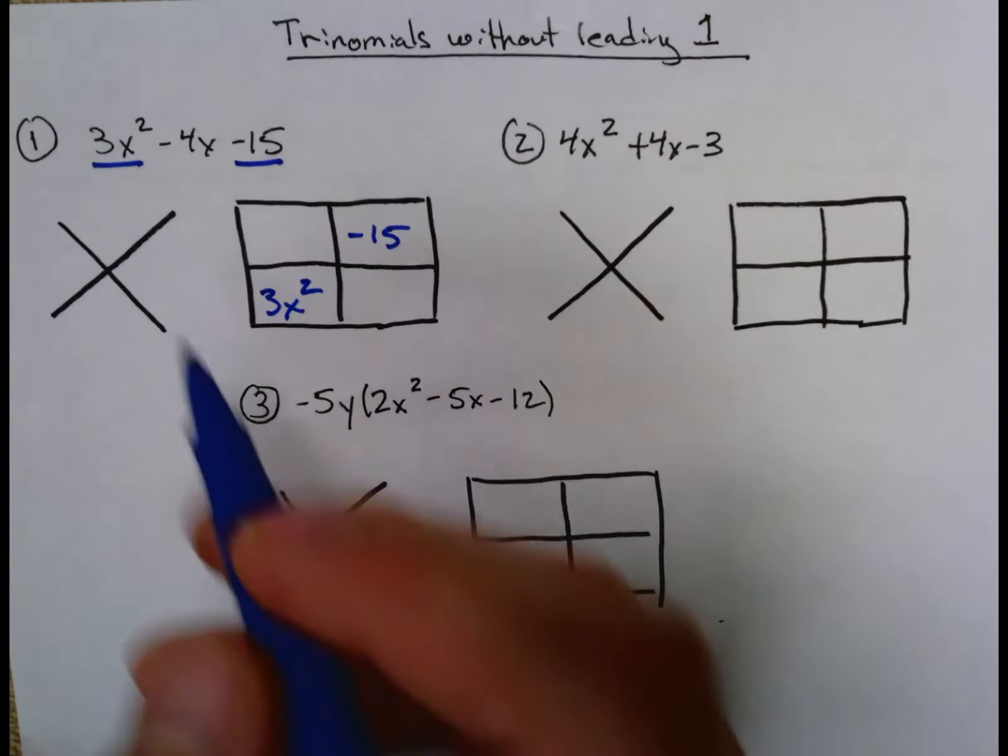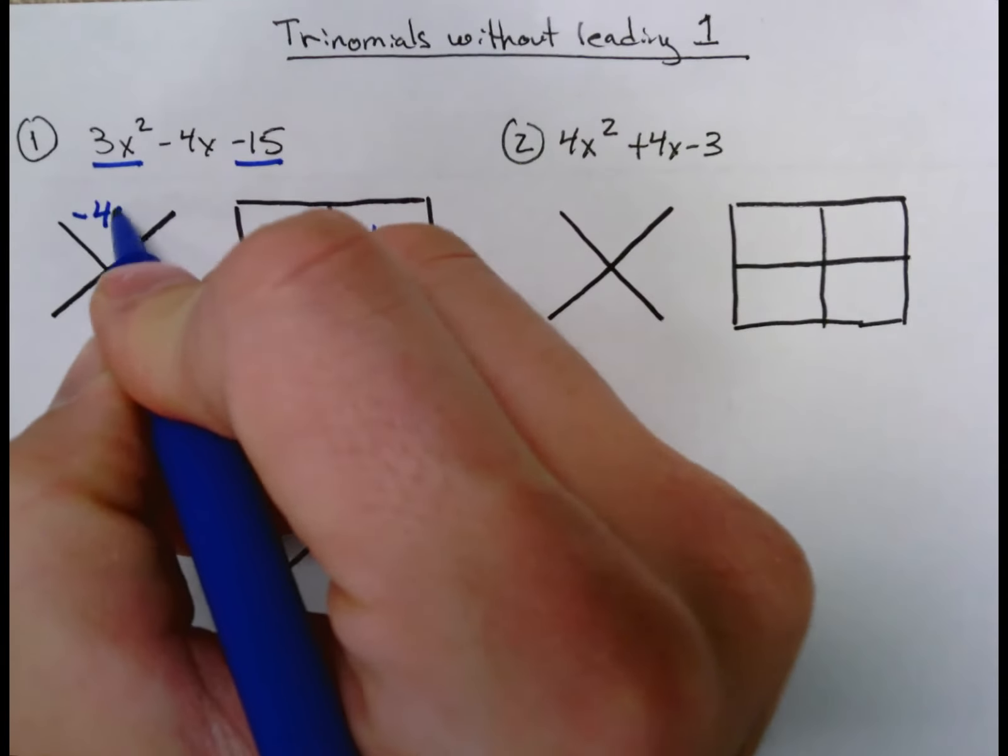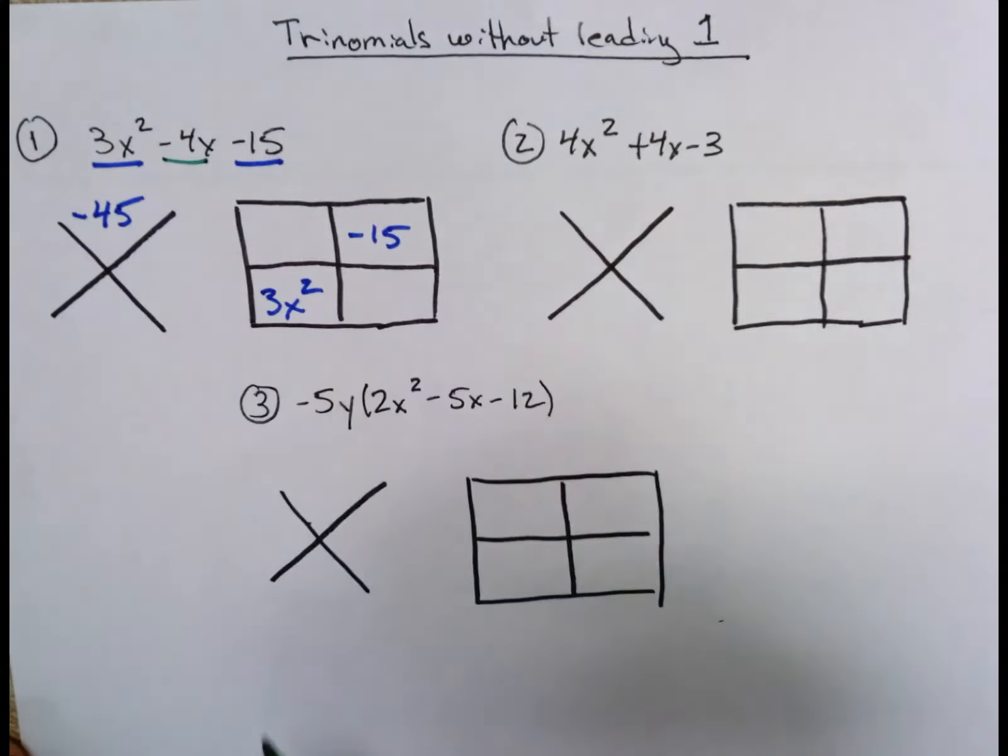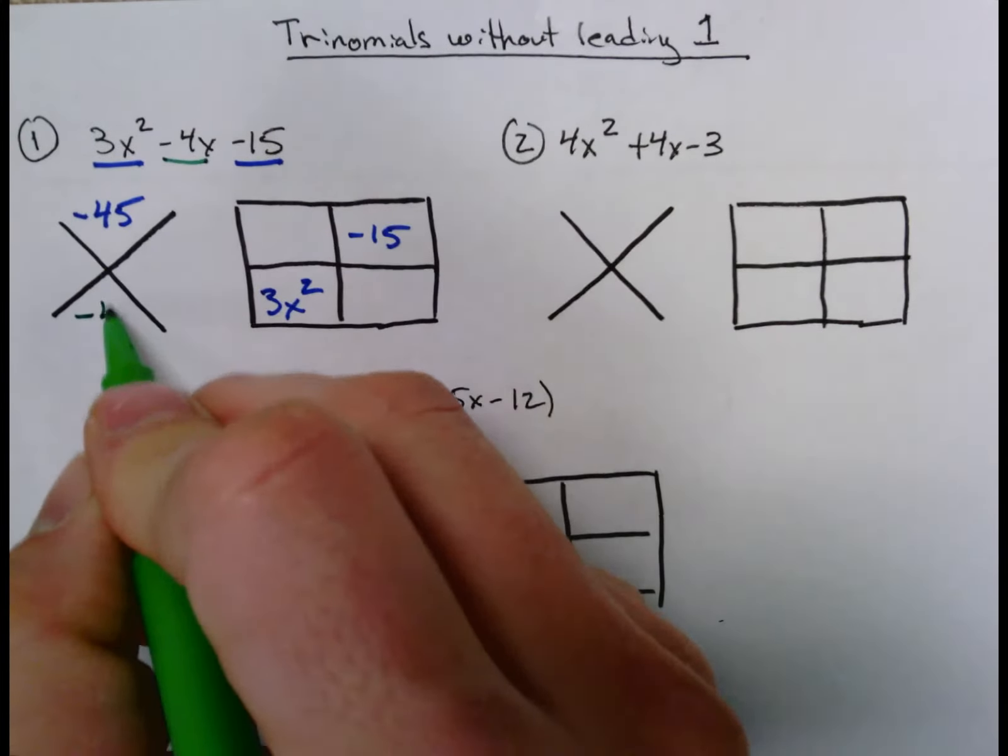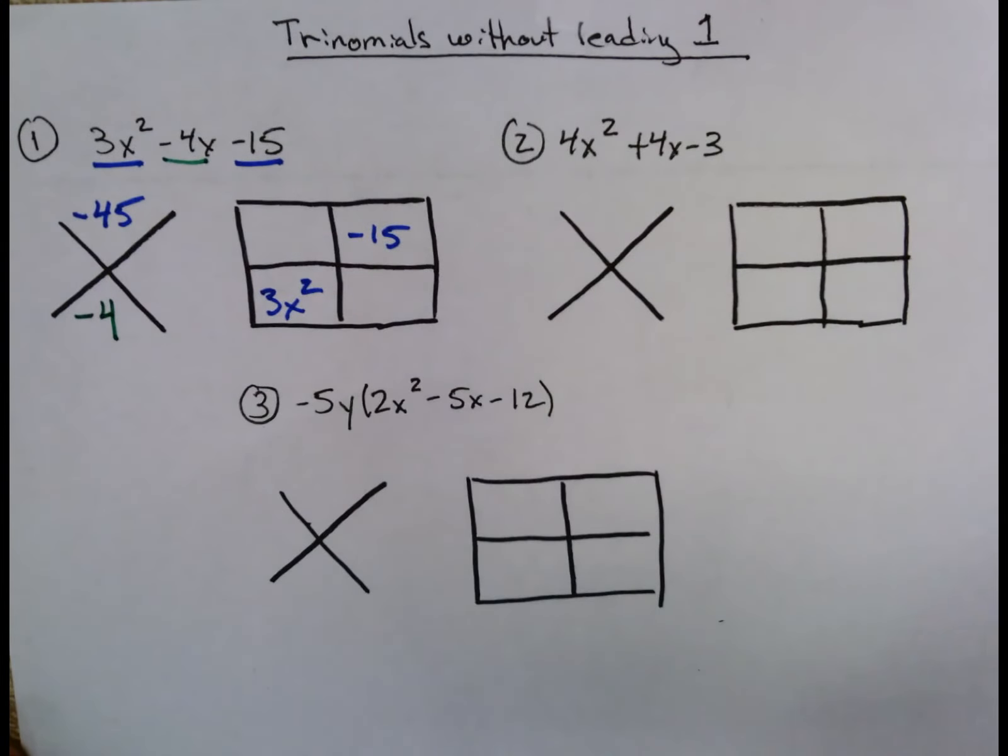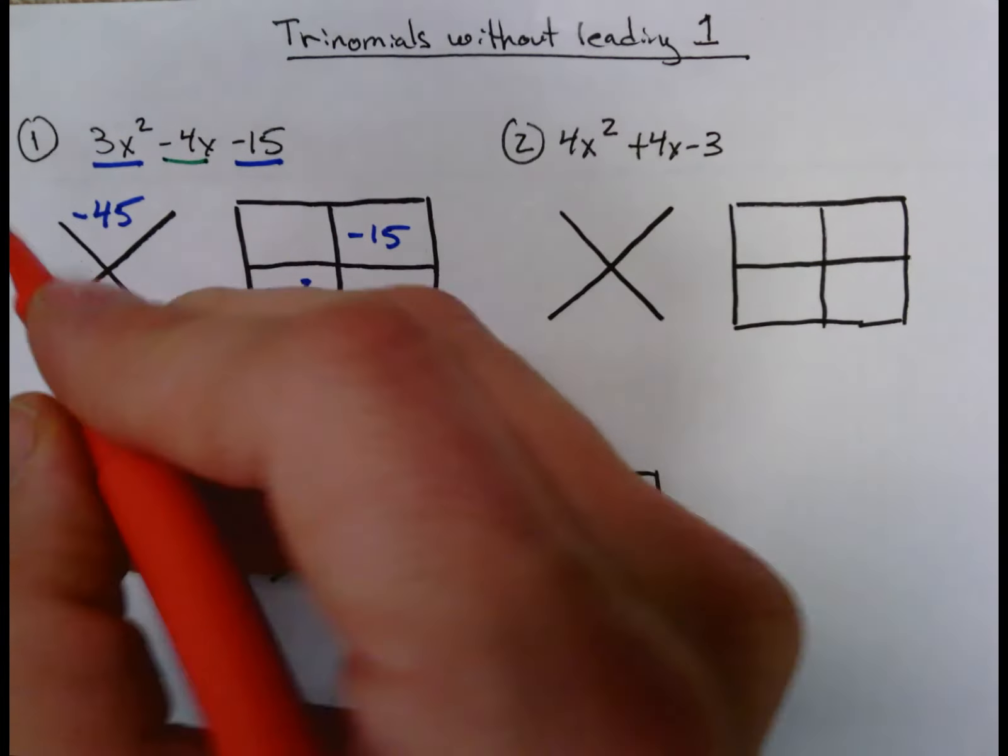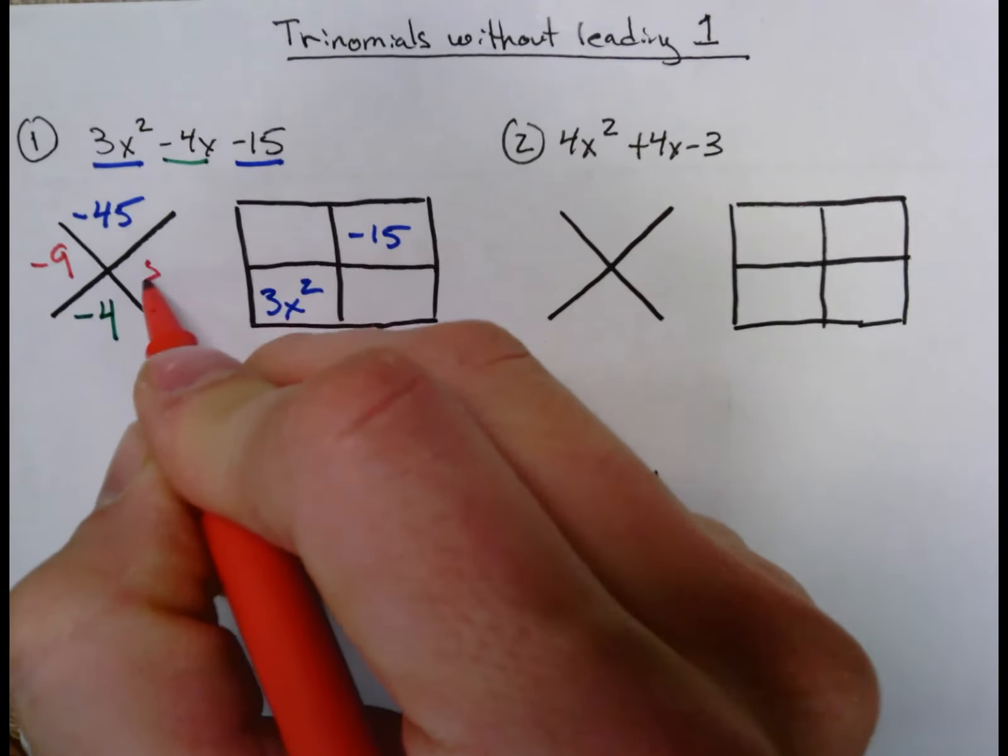Those get multiplied by each other, and you end up with -45 on top. And then the B goes in the bottom, which would be -4. So then you're trying to think of the two numbers that multiply to -45 and add up to -4, which would be -9 and +5.